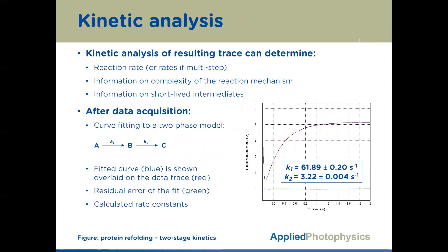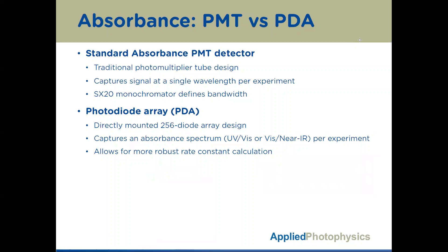The kinetic analysis of the resulting trace can determine several things, such as reaction rate or rates, but also information on reaction complexity such as short-lived intermediates. Determining the rate constants alongside fitted curves and residuals is what is typically done after acquisition of the signal. As I mentioned previously, there are actually several types of optical signals that can be monitored in a given stop-flow reaction, like absorbance, fluorescence, and quite a few others. But in this webinar, I would like to focus on the absorbance-based signals.